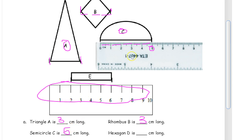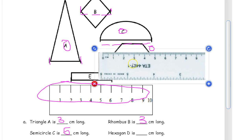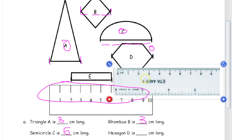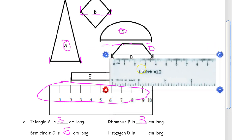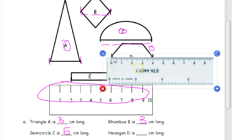And then we're going to take the hexagon D. You can see that's one, two, three. If you start at the zero, it goes right to the four. That's four centimeters. Four centimeters.